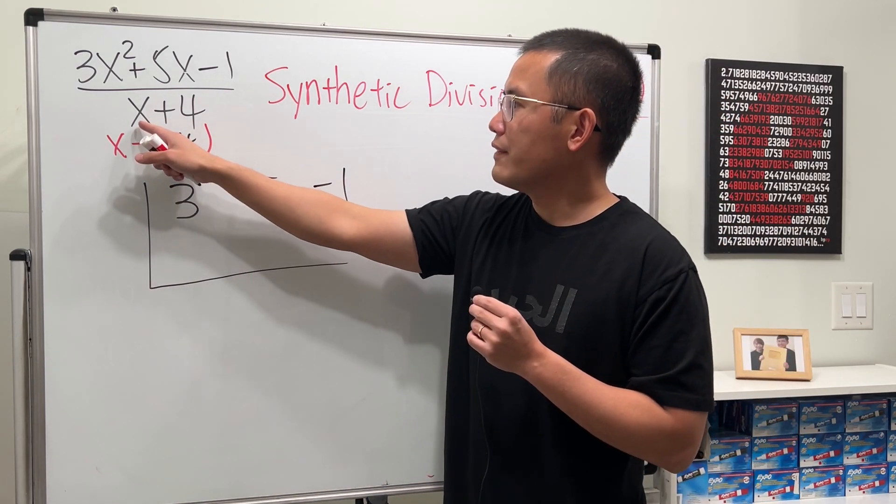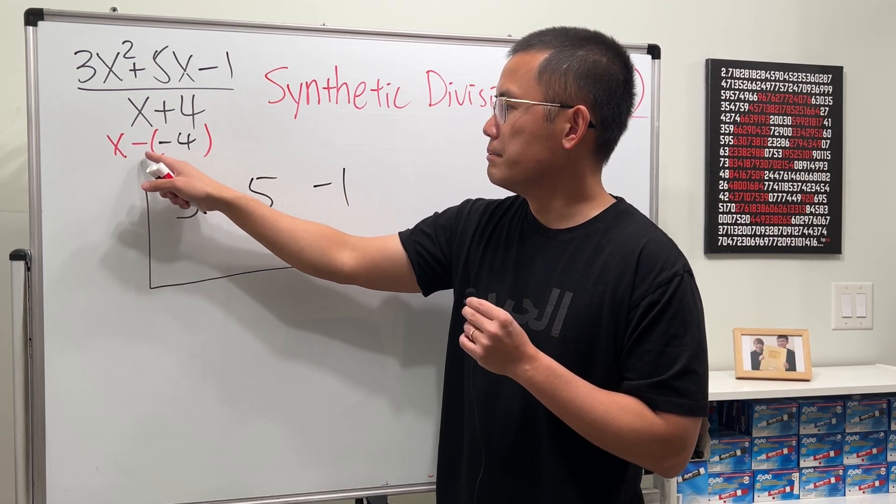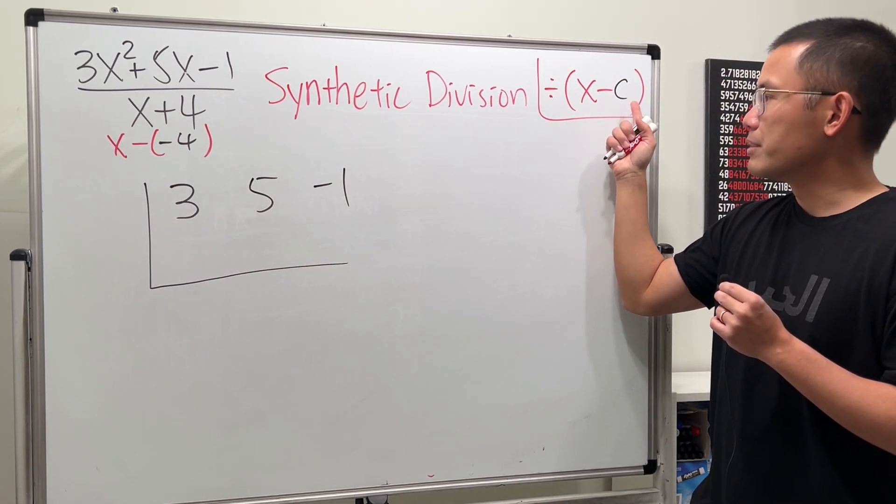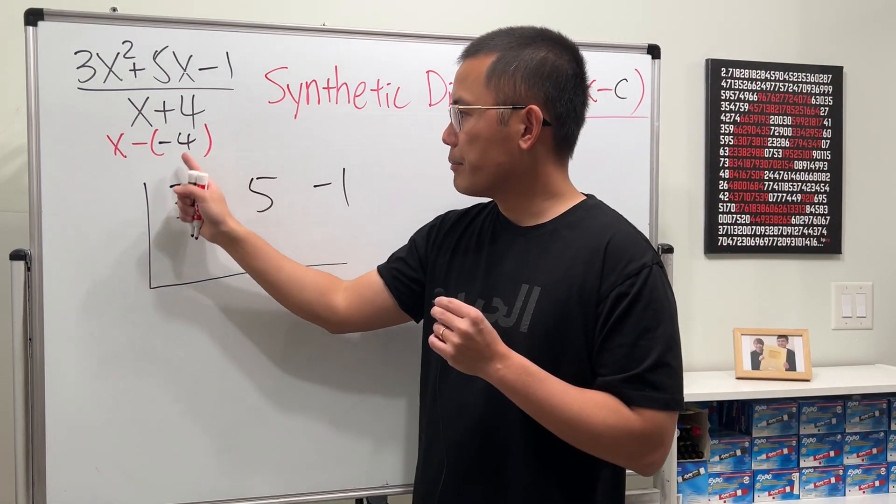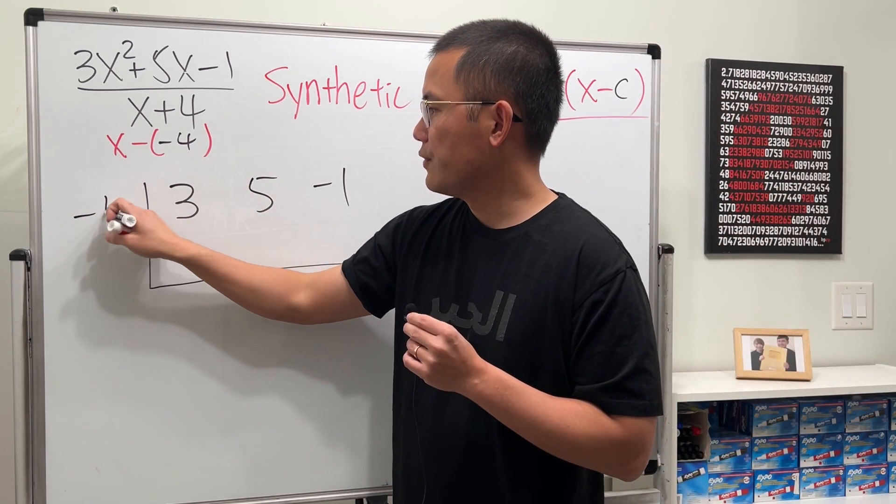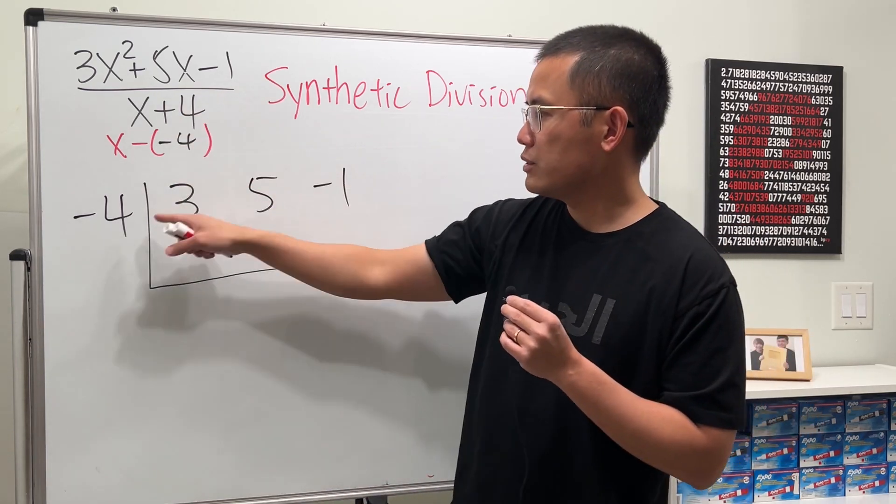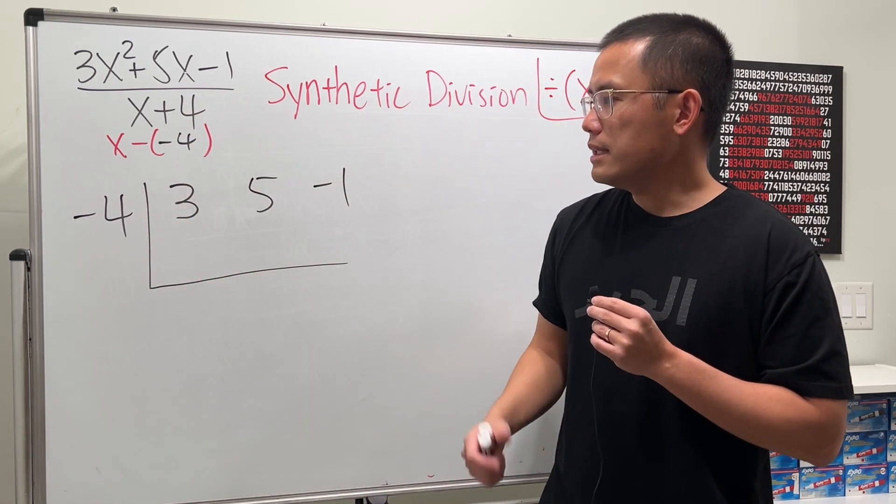Now, when we have x plus 4, you look at it as x minus negative 4. Alright, this version is dividing by x minus the number c. You put down this number on the outside, which is the negative 4 right here. You just always do the opposite. If it's plus, you put down minus. Alright, then this is how it goes.